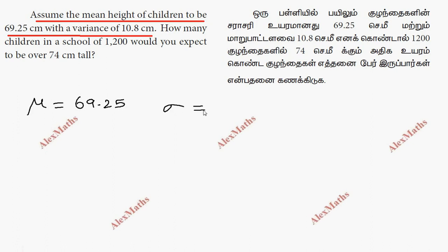Sigma is the standard deviation, but standard deviation is the root of variance. Since the variance is 10.8, we will calculate the standard deviation: σ = √10.8 = 3.2863.